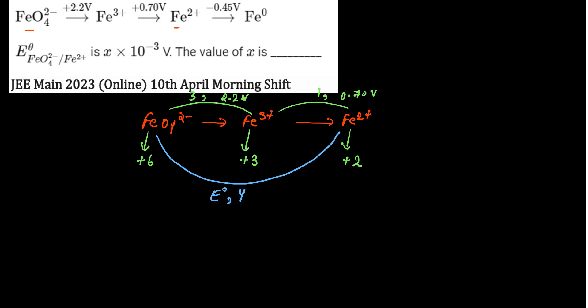So E⁰ will be equal to 3 times 2.2 plus 1 times 0.70 divided by 4. So 3 times 2.2 equals 6.6, plus 0.7, divided by 4, that is 7.3 divided by 4.